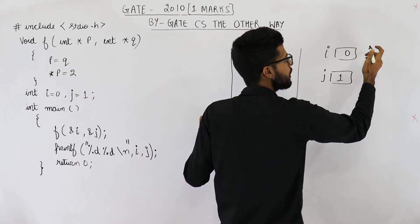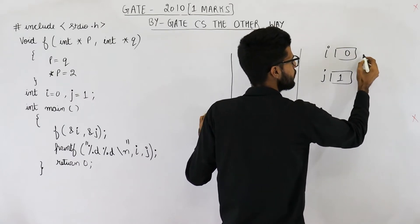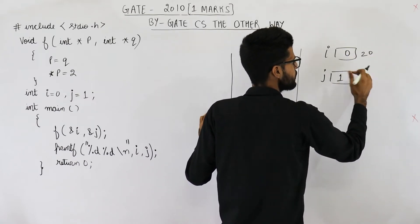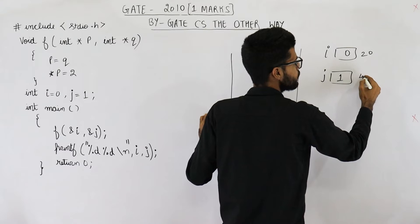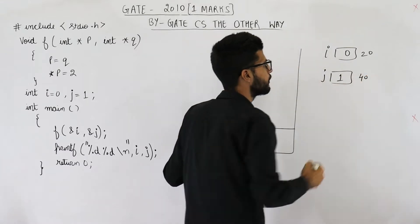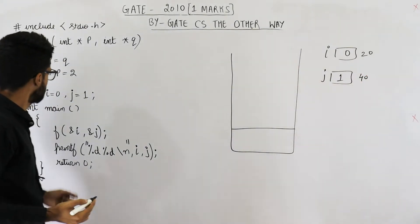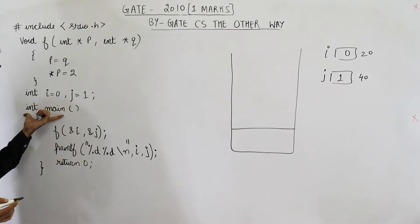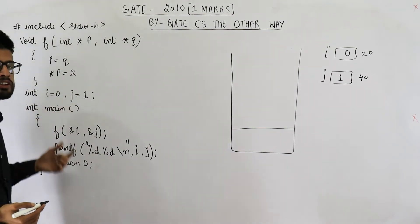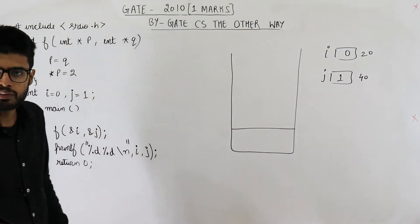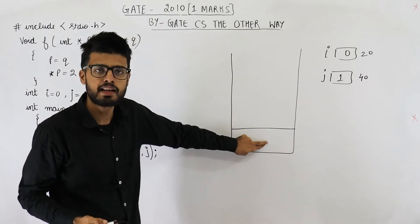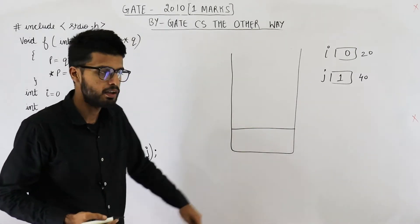Suppose the address of variable i is 20 and the address of j is 40. Now you have to start execution from the main function, which means an activation record for the main function will be pushed onto the stack. Suppose this is that activation record.